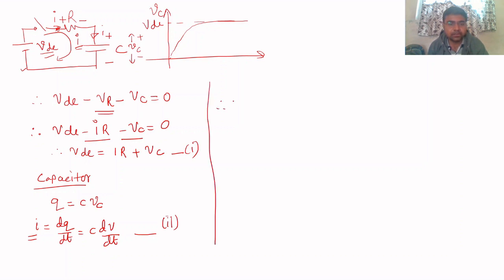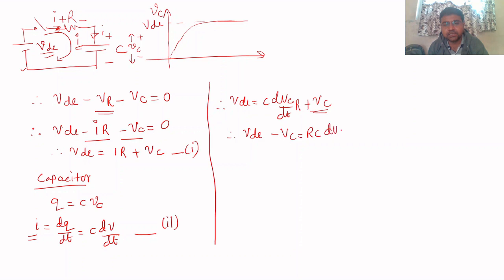Substituting equation two into equation one: VDC = RC·dVC/dt + VC. Rearranging, VDC minus VC equals RC·dVC/dt.